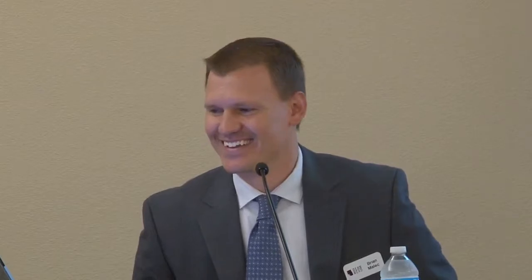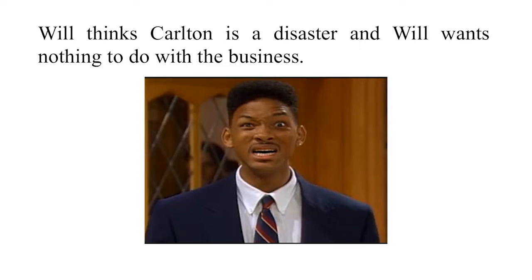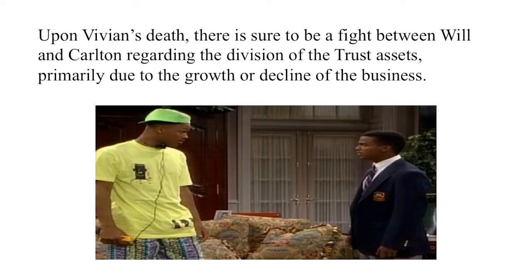Carlton hates the idea that his labor in the business will benefit Will and his descendants after mom passes away, because Will's share of the credit shelter trust is 50 percent — so whatever the assets are at Vivian's death, Will gets 50 percent. Of course, Will thinks Carlton is a disaster and wants nothing to do with the business. Upon Vivian's death, there's sure to be a fight between them regarding the division of trust assets, and valuation of the business is likely to be a dispute.